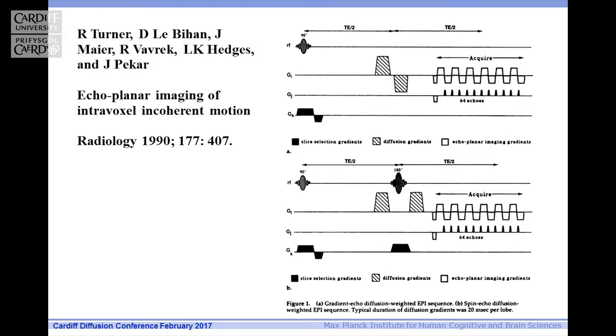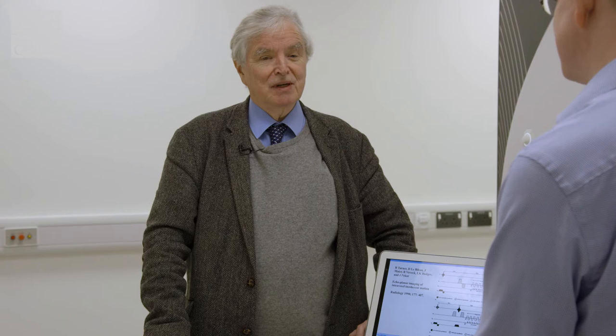That sequence was from 1986, but you'd presented it and hadn't actually been able to implement it yet - so could you talk us through how you go from a sketch on paper to practical implementation? In Nottingham we were still working at 0.5 Tesla at best, and the gradient strength was high but not really high enough to give the diffusion weighting one needed. The agenda in Nottingham was cardiac and not brain, so things were limited.